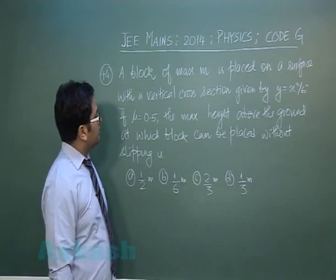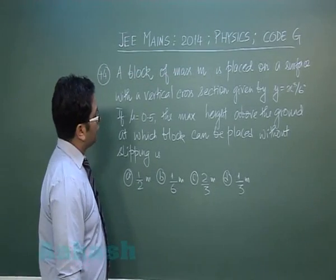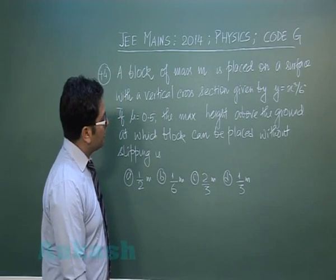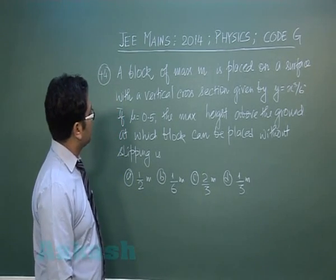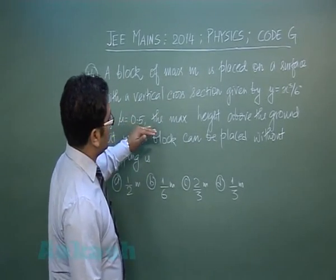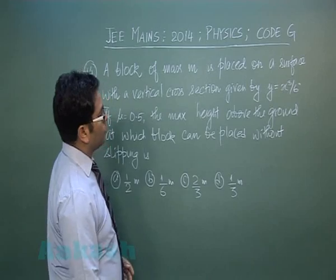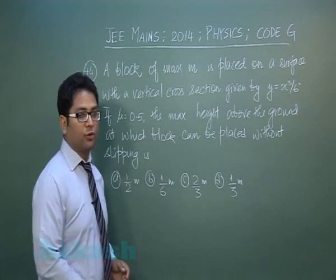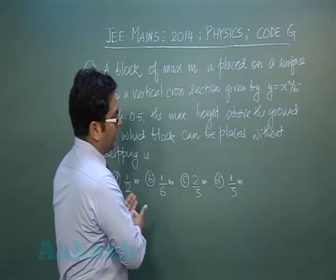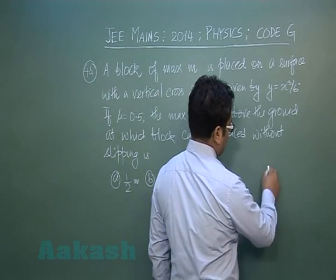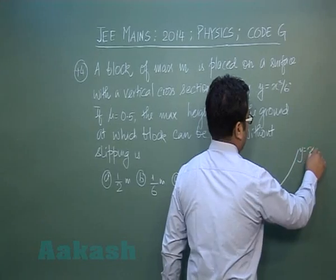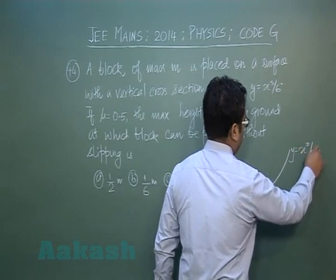Proceeding forward, question number 44 is from laws of motion, framed from the topic of friction. A block of mass m is placed on a surface with a vertical cross section given by y equals x cubed by 6. So it could be a curved plane whose cross section is described by y equals x cubed by 6.